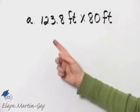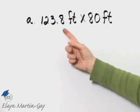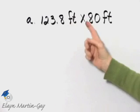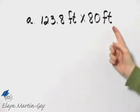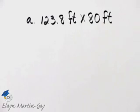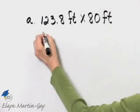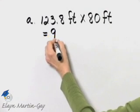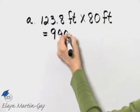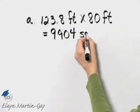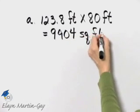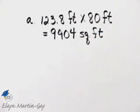So here's how we find the area of her lawn: 123.8 feet multiply that by 80 feet. I'll let you multiply, but once you multiply, you'll have 9,904 and that is square feet. That is the area of her lawn.